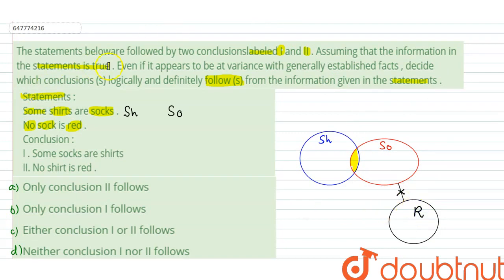Now, our conclusion one is that some socks are shirts. Here in the diagram, some socks are shirts, which is shown in the overlapping region. So, conclusion one follows.